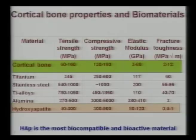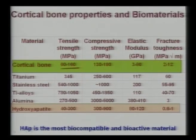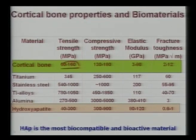Coming to the cortical bone properties compared to different materials: cortical bone is the compact part — the outer shell of a femur or a mature bone. Depending on anatomical location, there is a large variation in tensile strength, ranging from 60 to 160 MPa. This large variation is due to anatomical location — whether the bone is in the shoulder, thigh, or hand. Compressive strength is around 130–180 MPa, elastic modulus is around 3–80 GPa, and fracture toughness is around 2–12 MPa√m depending on anatomical location.